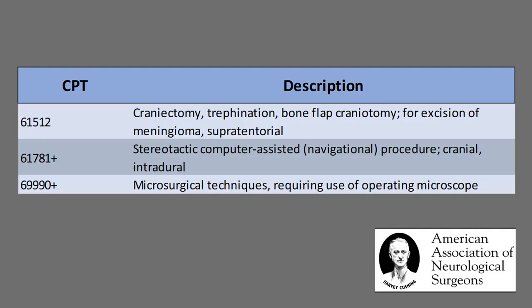The complete set of procedural codes used to describe the craniotomy for resection of a supratentorial meningioma are as follows: 61512 for the craniotomy and meningioma resection, 61781 for the computer-assisted navigation, and 69990 for the use of the operating microscope.